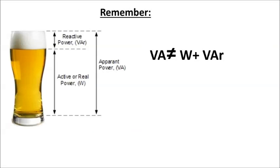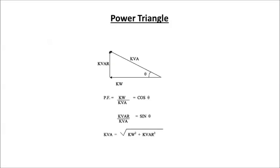Now we need to know that apparent power VA is not the linear sum of active and reactive power. The relation between these three components of power is given by the power triangle. This image is known as the power triangle, which gives the relation between all three components of electrical power — apparent power, active power, and reactive power. We will now use the greater units: apparent power denoted by KVA, active power by KW, and reactive power by KVAR.